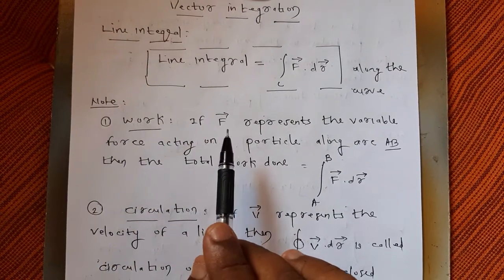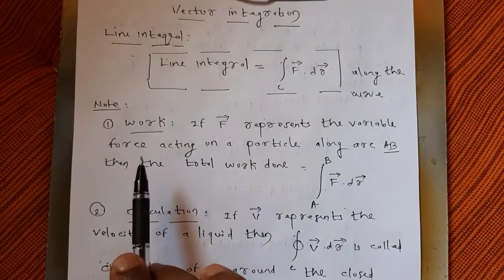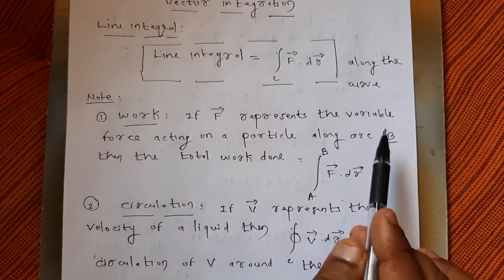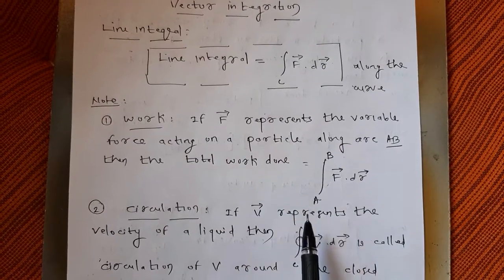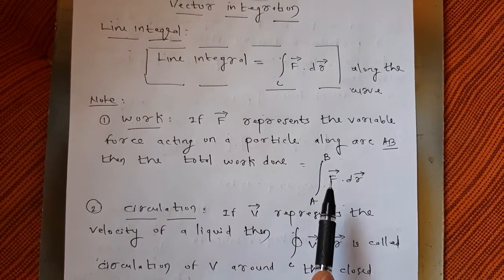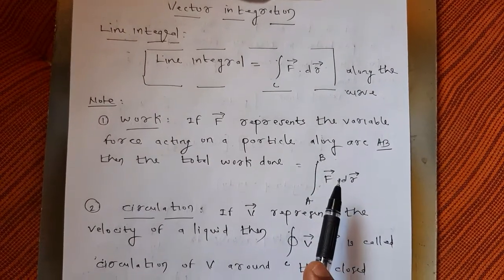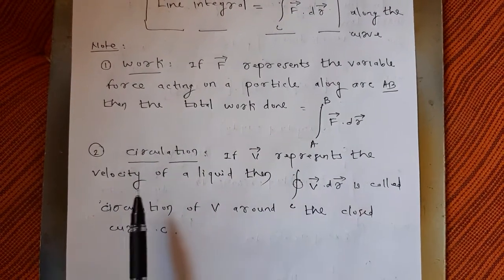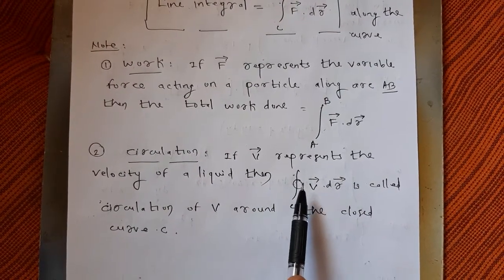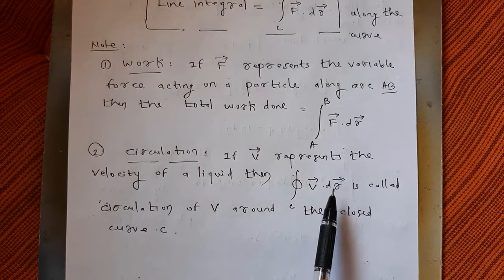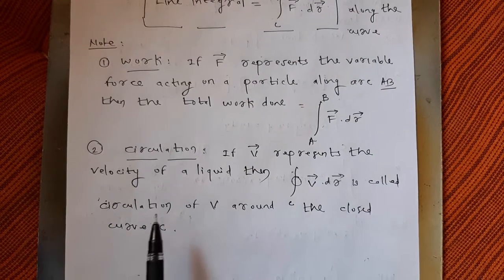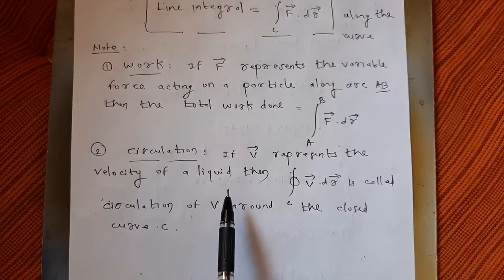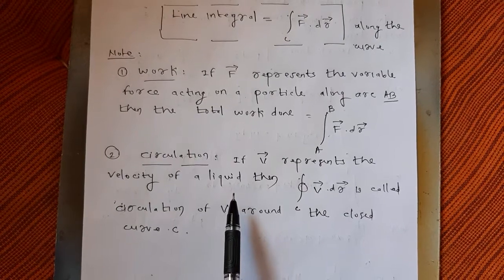Note 1 — Work: if F represents the variable force acting on a particle along some arc from A to B, then the total work done is given by integration from A to B of F dot dr. Note 2 — Circulation: if vector v represents the velocity of a liquid, then the closed integration of v dot dr around a closed curve C is called the circulation of v around C. Based on these two notes we will discuss some examples.